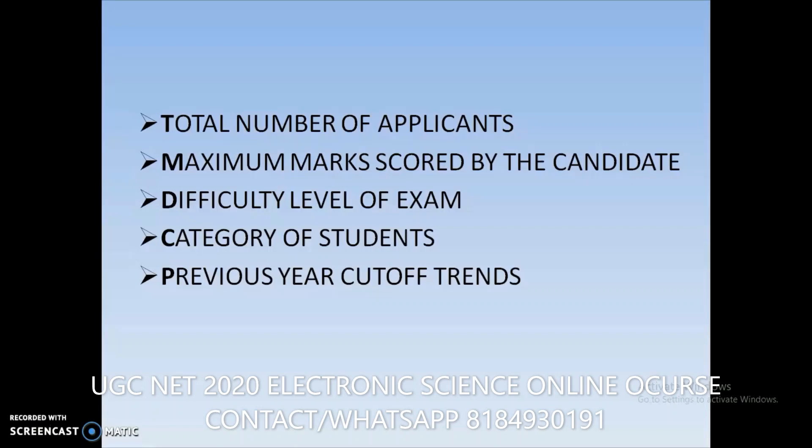The second factor is the maximum marks scored by a candidate. For example, if out of 100 marks in your subject someone scores 85, that becomes the maximum, and the cutoff will increase. If the maximum marks scored is 60 out of 100, the cutoff decreases; if it is 80, the cutoff may increase.